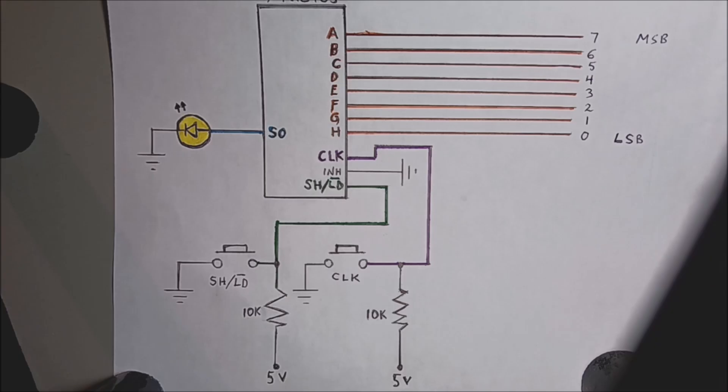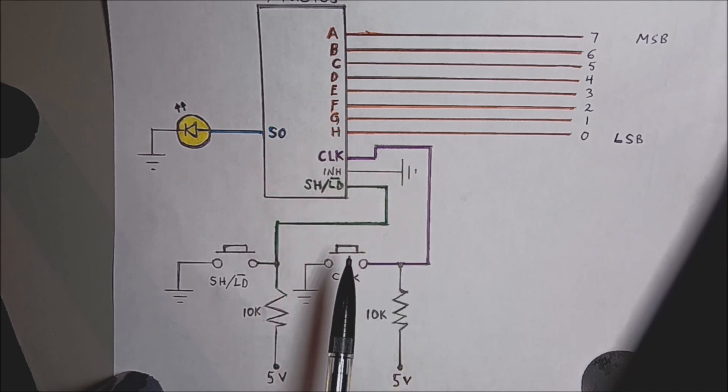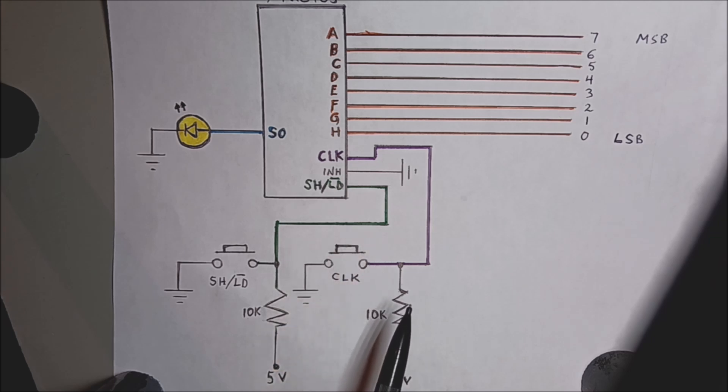So here's pin 1, which is the shift load pin, and it's hooked up to a pull-up resistor. When you push this push button, it'll send it a low signal. So this pin is triggered by a low signal. Likewise, the clock pin is also triggered by a low signal as well, and it's held high with a 10k pull-up resistor to 5 volts.